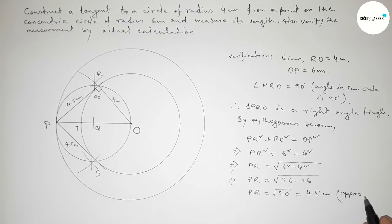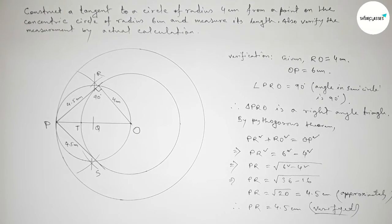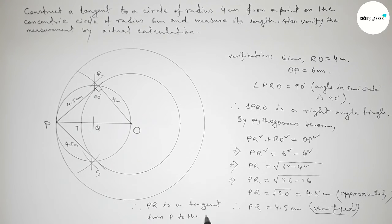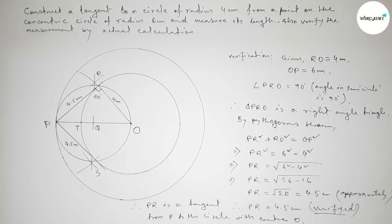We take this as approximately 4.5 centimeters. Therefore PR equals 4.5 centimeters, which matches our measured value — verified. So PR is the required tangent from point P, which is on the circumference of the larger circle of radius 6 centimeters, to the inner circle with center O and radius 4 centimeters. That's all, thanks for watching.